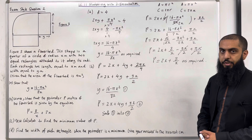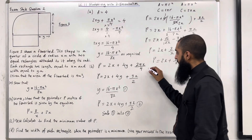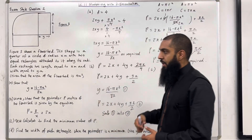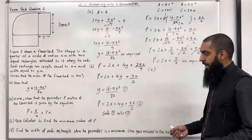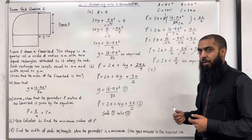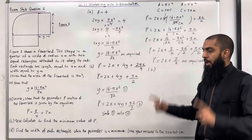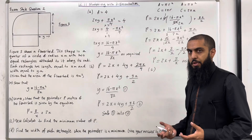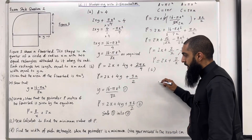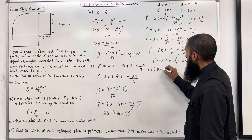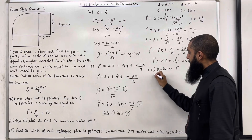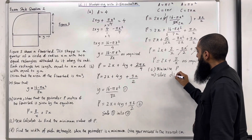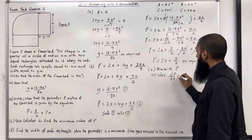Let's move on to Part C. Use calculus — differentiation — to find the minimum value of P. This is an optimisation problem. We're trying to minimise here, so we're using differentiation. To minimise P, this implies we solve dP over dx equals 0.